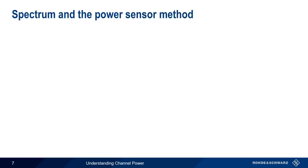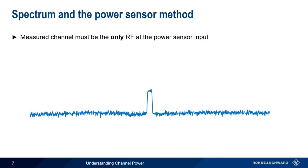The power sensor method only works if the signal we're measuring is the only signal present at the sensor's RF input. If other signals are within the power sensor's bandwidth, these have to be removed before we measure channel power. Otherwise, we'll be measuring the sum of all the power in the sensor's bandwidth and not just the power of the channel that we're interested in.